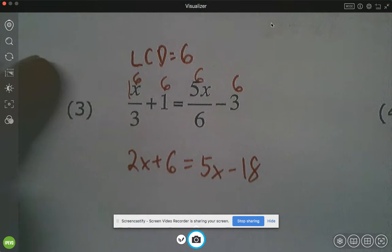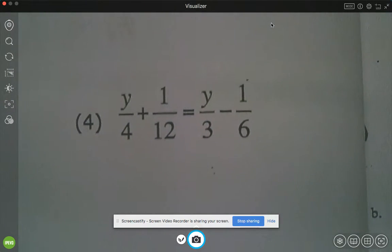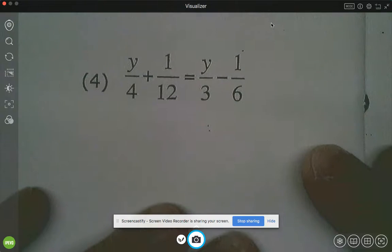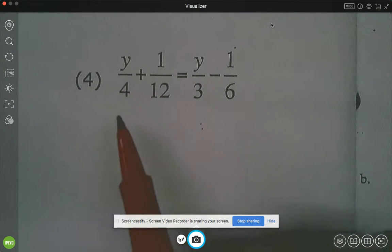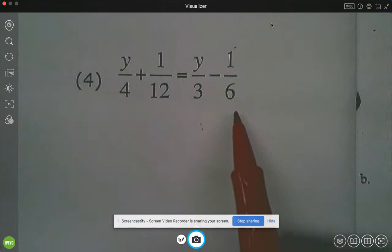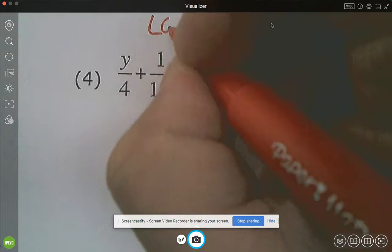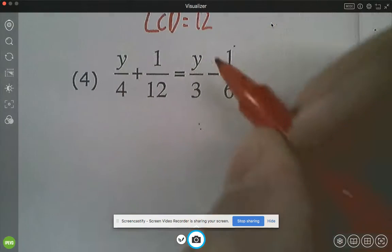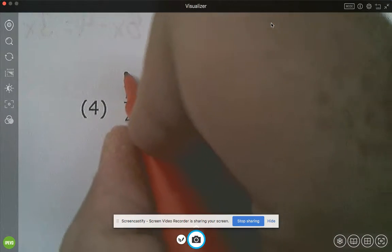All right, last one, number 4. Again, just focusing on clearing these fractions. So this is a good example. What's the LCD between 4, 12, 3, and 6? Yep, that would be 12. So we're going to multiply everything by 12.